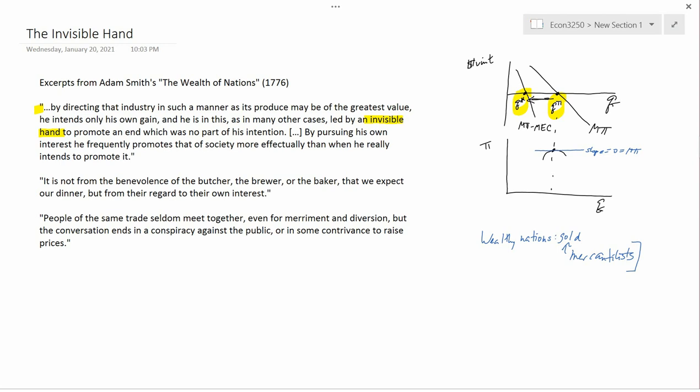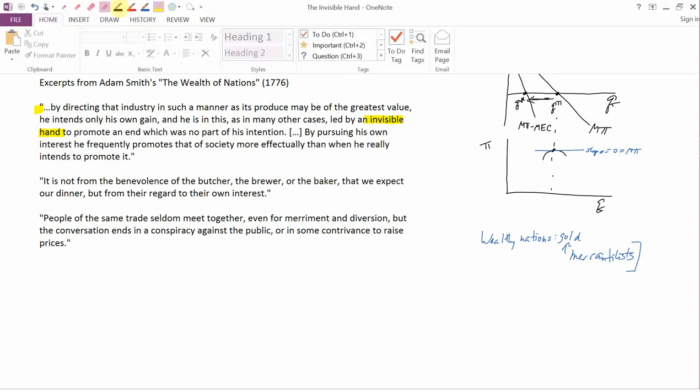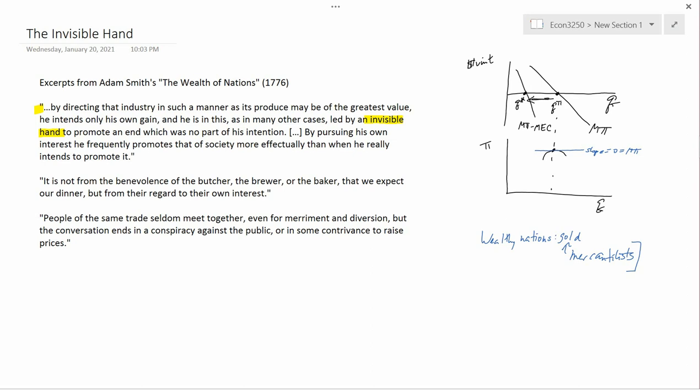This is a philosophy that says that there's no difference between what society should want and what private firms should want. In other words, it's a philosophy that says there really isn't a distinction between Q pi and Q star. Now Adam Smith, of course, was not talking about pollution. He wasn't thinking about things like this. But the point is that he started the idea that government should leave private firms alone.